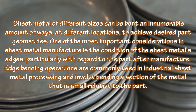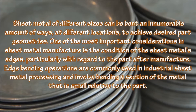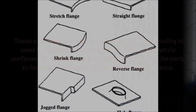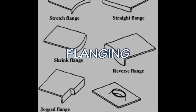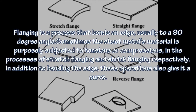Edge bending involves bending a section of the metal that is small relative to the part; these sections are located at the edges. Edge bending is used to eliminate sharp edges, to provide geometric surfaces for purposes such as joining, to protect the part, to increase stiffness, and for cosmetic appearance.